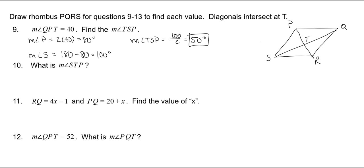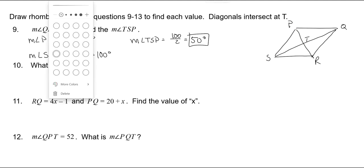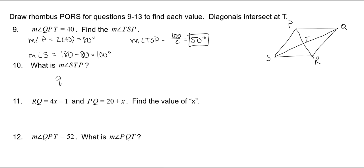The next one is angle STP—that's the central angle right here, and those are always 90 degrees because the diagonals of a rhombus are perpendicular. So that's 90 degrees.